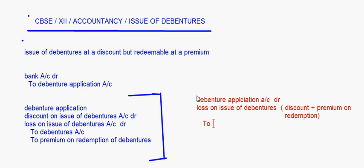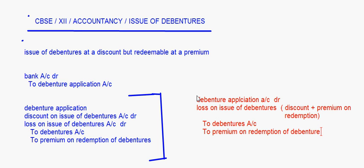Then you can write to debentures account and then to premium on redemption of debentures account. So this is how we deal with cases in which the debentures are issued at a discount but redeemable at a premium.